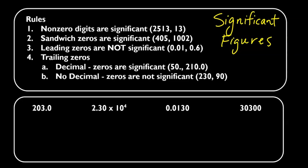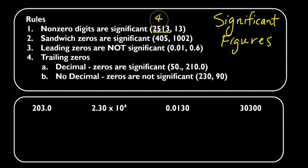In this video, we're going to learn how to identify significant figures. There are a few rules to remember. The first is that non-zero digits are significant. So 2, 5, 1, 3 — all of these digits are non-zero, so they are all significant.